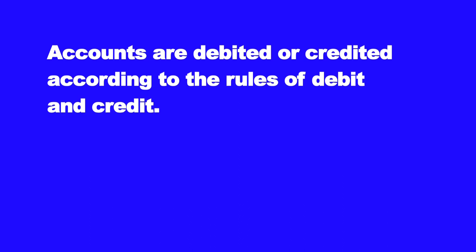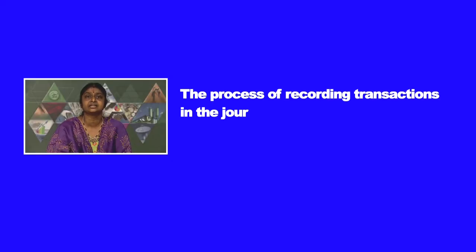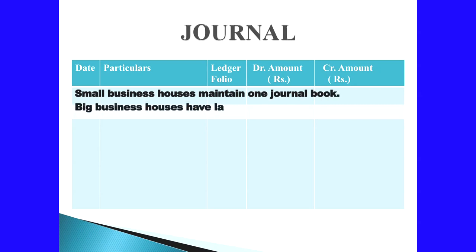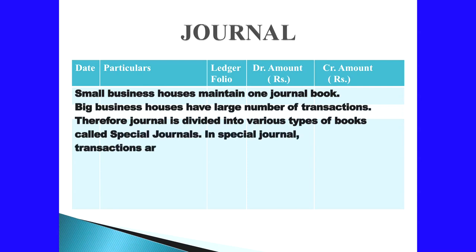We have to follow certain rules while recording. Accounts are debited or credited according to the rules of debit and credit. The process of recording transactions in the journal is known as journalizing. Small business houses maintain one journal book, while big business houses have large numbers of transactions, so the journal is divided into various types of books called special journals. In special journals, transactions are recorded depending upon the nature of the transaction.